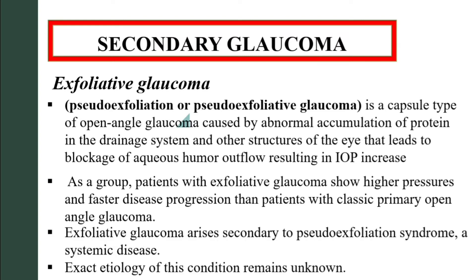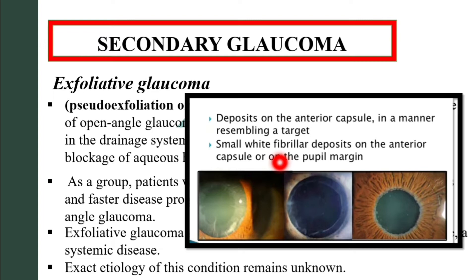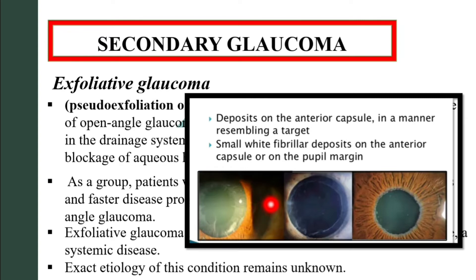Exfoliative glaucoma arises secondary to pseudo-exfoliation syndrome, which is actually a systemic disease; the exact etiology of this condition remains unknown. You can see deposits on the anterior capsule in a manner resembling a target, and also small white fibrillar deposits on the anterior capsule or on the pupil margin.